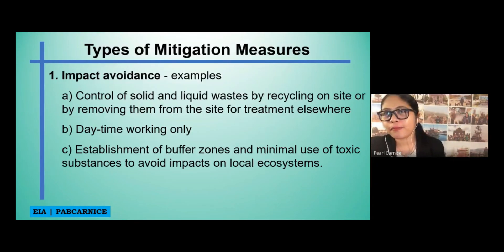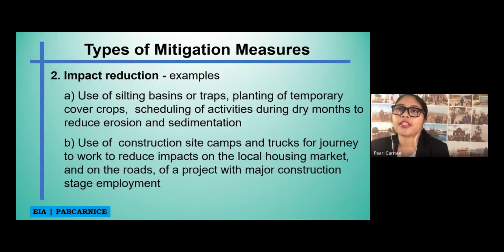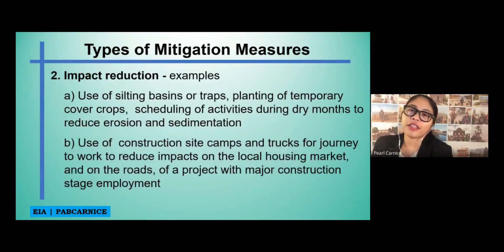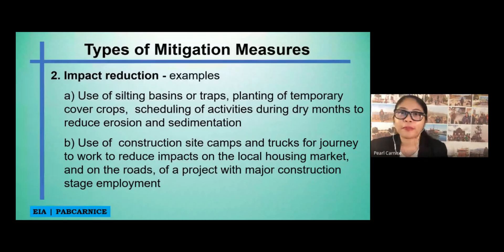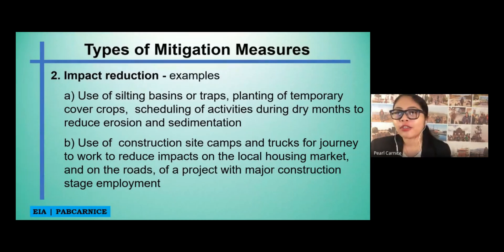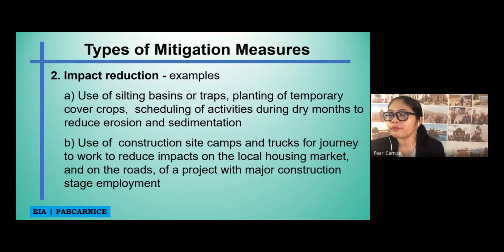The next type of mitigation measures is impact reduction. Examples of this include the use of silting basins or traps, planting of temporary cover crops, and scheduling of activities during dry months to reduce erosion and sedimentation.